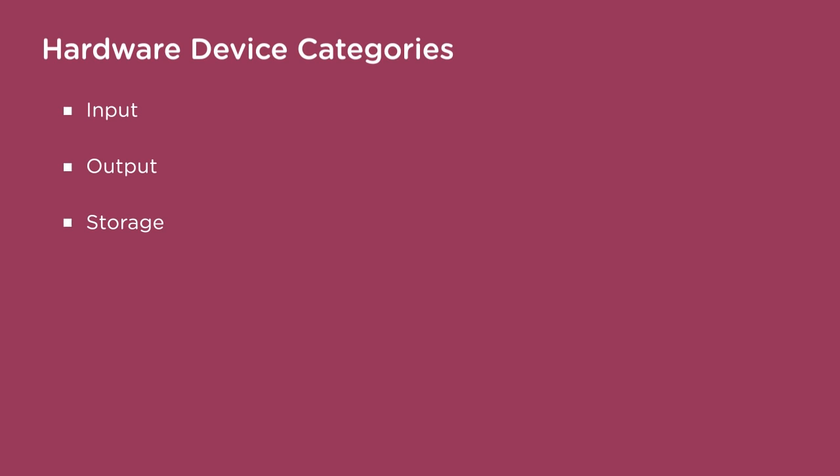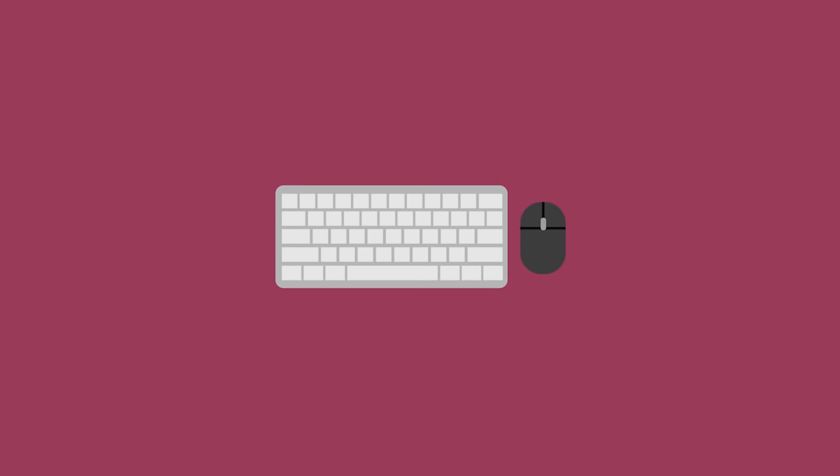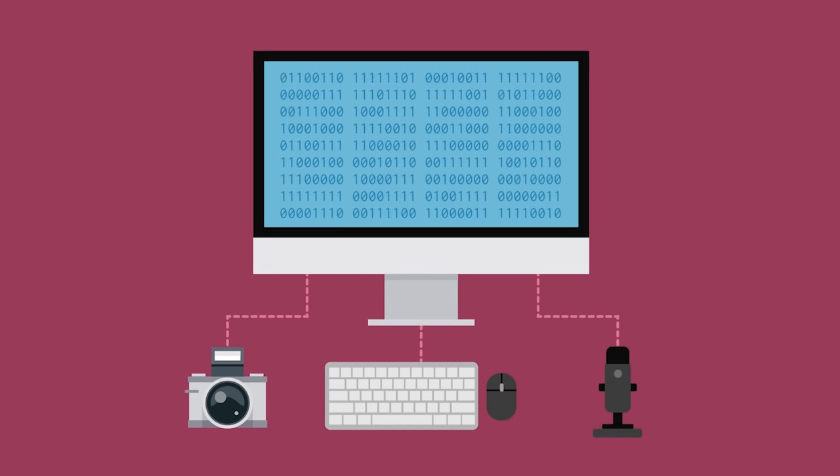An input device is hardware that provides data to a computer. For example, you may use a keyboard and mouse to enter data into a word processing application, a camera to take photographs, and a microphone to record audio. The computer receives this information and converts it into data it can use — namely, a series of zeros and ones called binary, which we'll dig into in the next video.